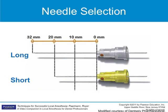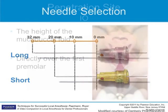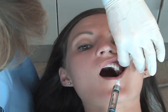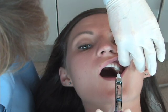Use a 25 or 27 gauge short needle for this injection. In some cases, a 27 gauge long needle may be preferred. The penetration site is at the height of the mucobuccal fold directly above the maxillary first premolar.